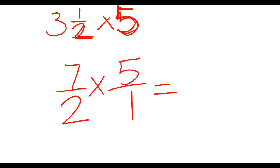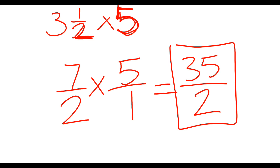All right, 7 times 5 would be 35. And 2 times 1 is 2. And there's nothing that both 35 and 2 can be divided by. So this is our final answer.